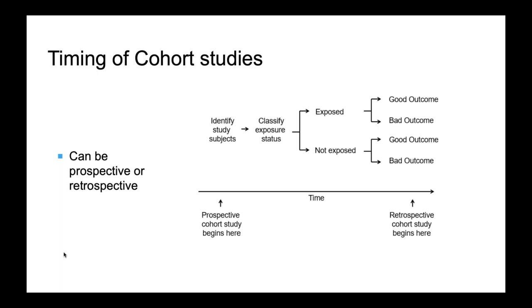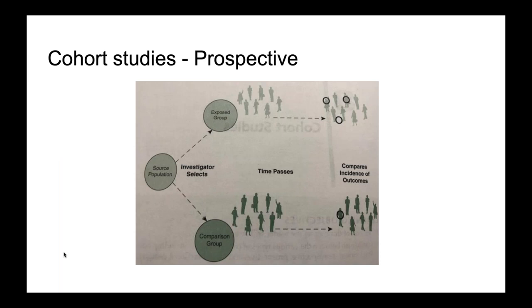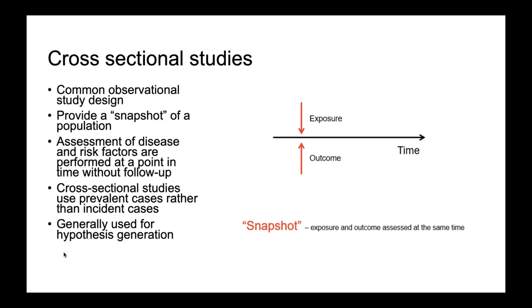With the timing of cohort studies, you're looking at exposure status and moving forward in time — you're exposed or not exposed, and you observe whether there's a good outcome or a bad outcome. With your retrospective cohort studies, you're again focusing on those exposures going back in time. You've got prospective cohort studies: your source population, your investigator selecting your comparison group, your exposed group, and then you're focusing on comparing the incidence of outcomes. You have to find whatever helps you remember: case controls, you're focusing on outcomes; cohort studies, you're focusing on exposed versus non-exposed.